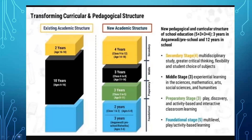Transforming the curricular and pedagogical structure: it is divided into two parts — the existing academic structure and the new academic structure. The new pedagogical and curricular structure of school education follows a 5+3+3+4 pattern with three years in Anganwadi or preschool and twelve years in school. The secondary stage features multidisciplinary study with greater critical thinking, flexibility, and student choice. The middle stage emphasizes experimental learning in science, math, arts, social science, and humanities. The preparatory stage is based on play, discovery, and activity-based learning. The foundational stage uses multilevel play and activity-based learning.